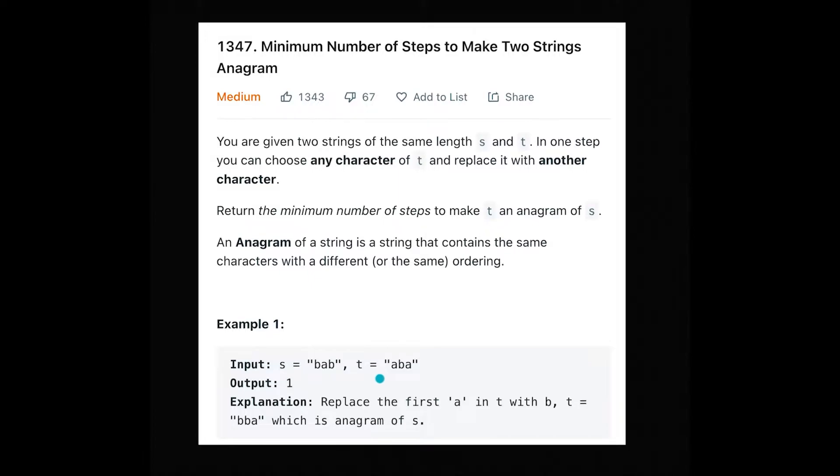T is a b a. The return value should be 1 because you replace the first a in t with b, so t equals b b a which is an anagram of s. The other day I solved the valid anagram - I put the link in the description.